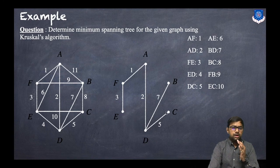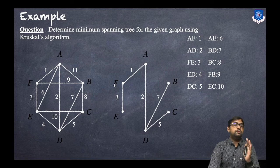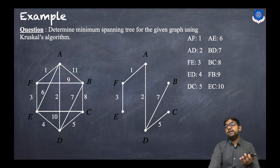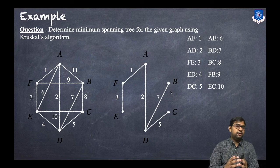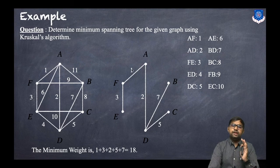If we take BC with weight 8, it will form a cycle, so it's not possible. If we take FB, it would be a spanning tree but not a minimum spanning tree, so we don't include it. Similarly, EC would be a spanning tree but not the minimum one. We verify that all vertices are present and connected. The weight of this minimum spanning tree is 1 + 2 + 3 + 5 + 7, which equals 18.